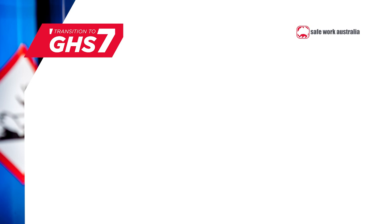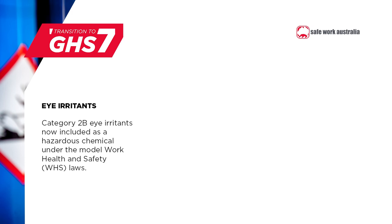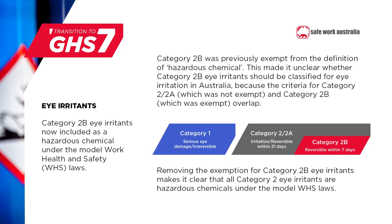The final hazard class we'll discuss today is eye irritants. As part of Australia's transition to GHS7, the definition of a hazardous chemical in our model work health and safety laws is changing. Category 2b eye irritants will no longer be exempt from the definition of a hazardous chemical and will require labels and safety data sheets. We understand that this will be a big change for some businesses, which is why it's been included in the two-year transition. From 1 January 2023, all Category 2 eye irritants should be treated as hazardous chemicals and have correct labels and safety data sheets.